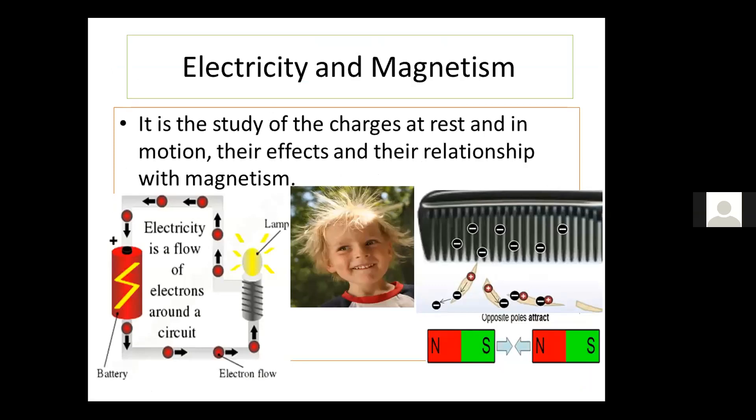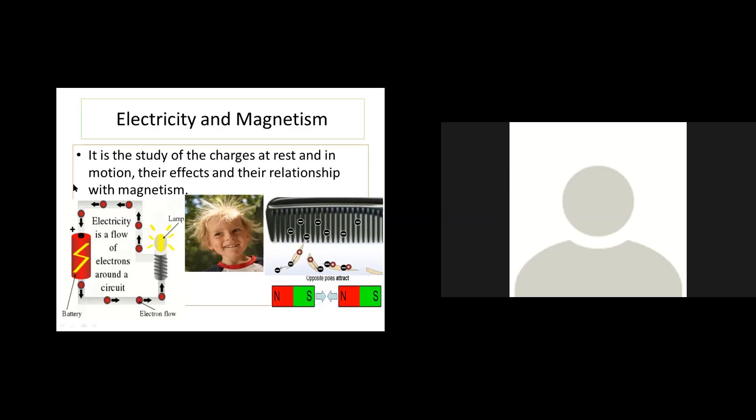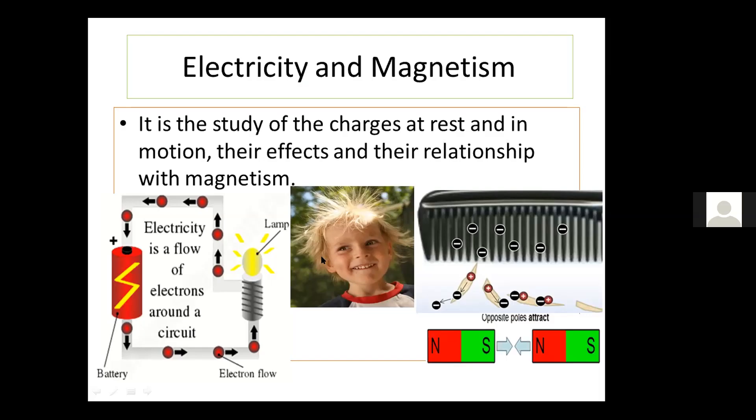Electricity and magnetism. It is the study of charges at rest and in motion, their effects and their relationship with magnetism. In the first picture, you can see the effect of charges in motion. The charges in motion generate electricity. When you connect a wire with a bulb and a battery, charges start to flow, thus lighting your bulb up.